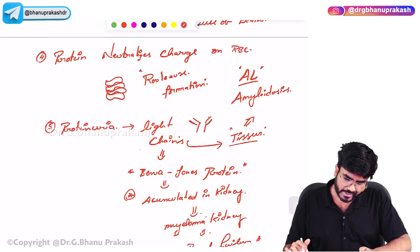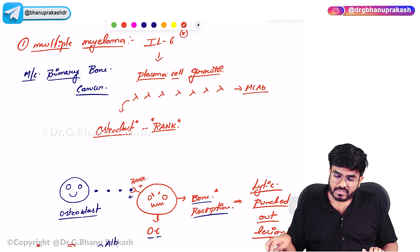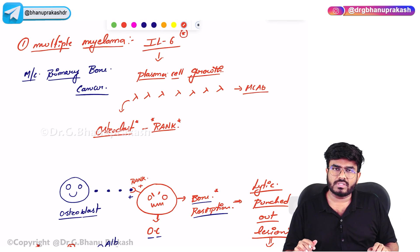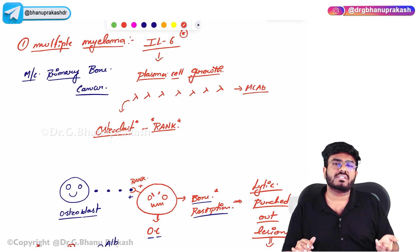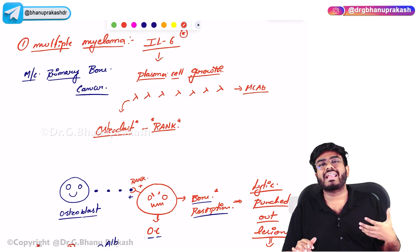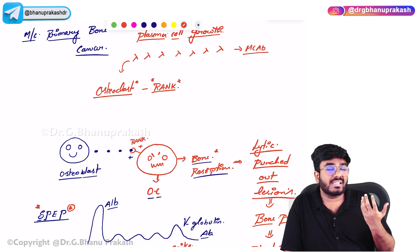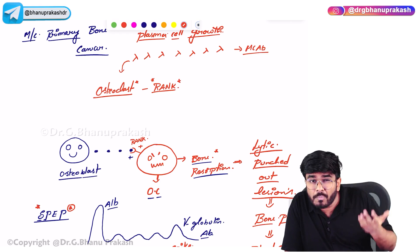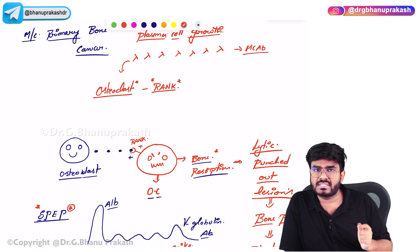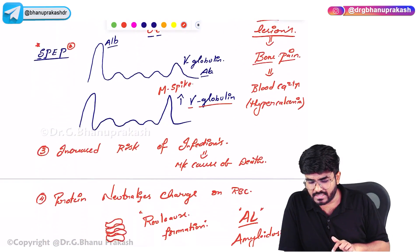So these are the key points for your exam regarding multiple myeloma — the most common primary bone cancer. High levels of interleukin-6 stimulate plasma cell growth. Plasma cells produce monoclonal antibodies lacking antigenic diversity, leading to recurrent infections, which is the most common cause of death. Neoplastic plasma cells stimulate RANK Ligand on osteoclasts, causing punched-out lytic bone lesions and hypercalcemia. Bence Jones proteins, myeloma kidney, and AL amyloidosis are also seen.